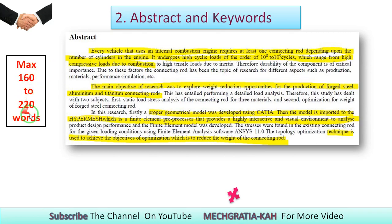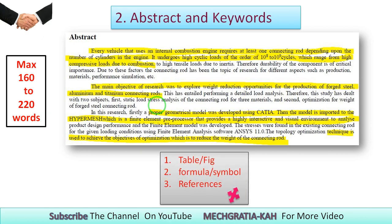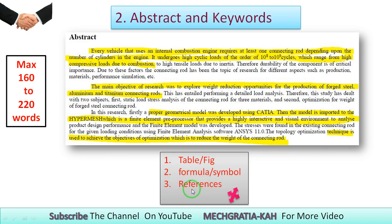The abstract should be between 160 to 220 words. When writing the abstract, there are certain things you should not include — you should not include tables, formulas, symbols, or references inside the abstract.